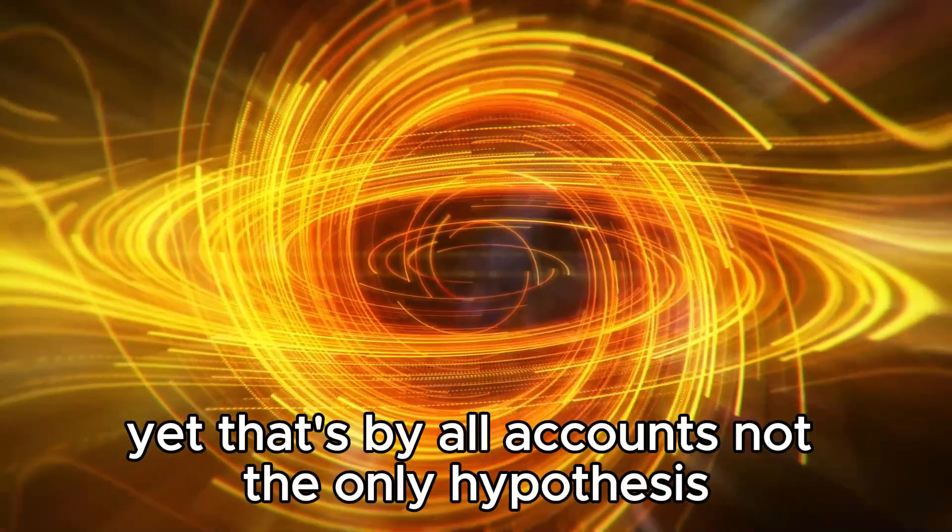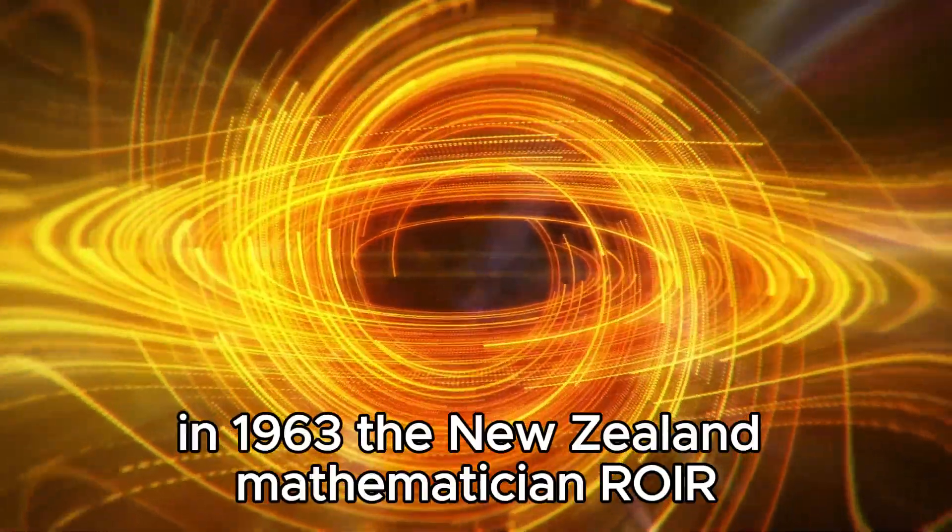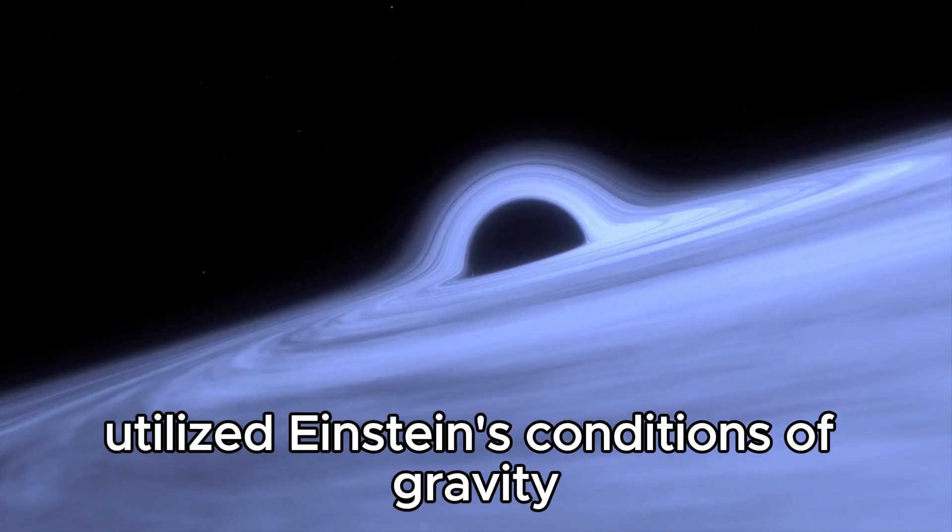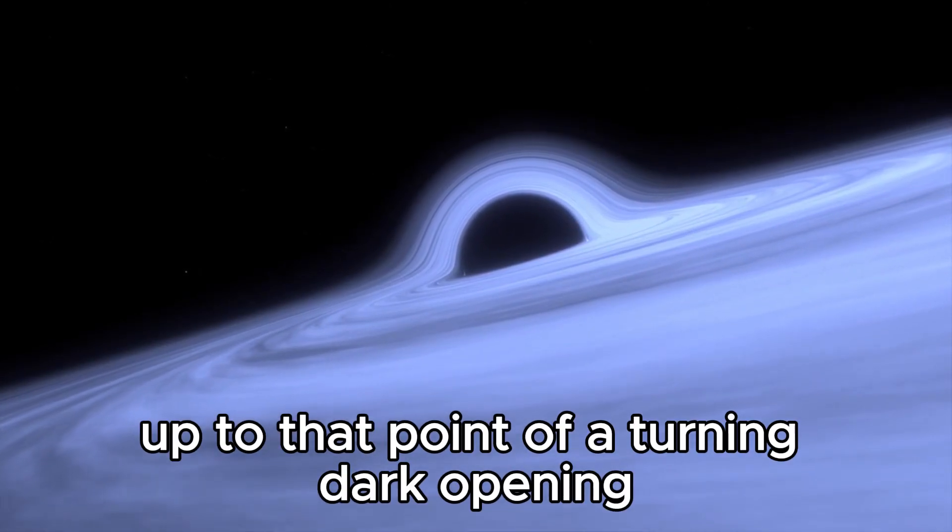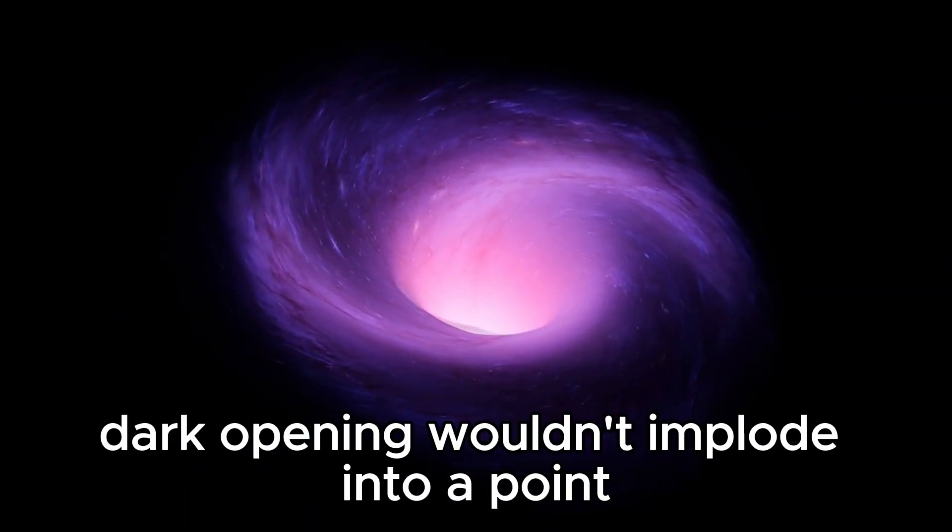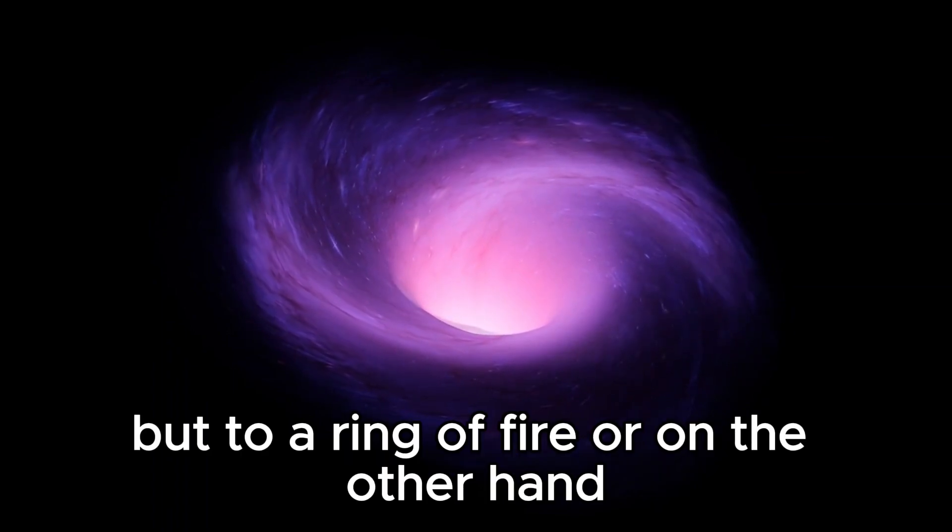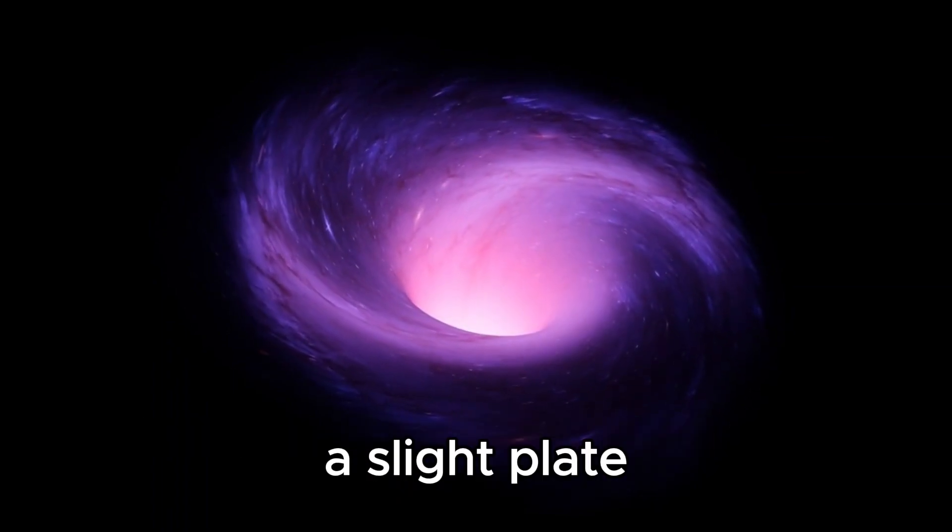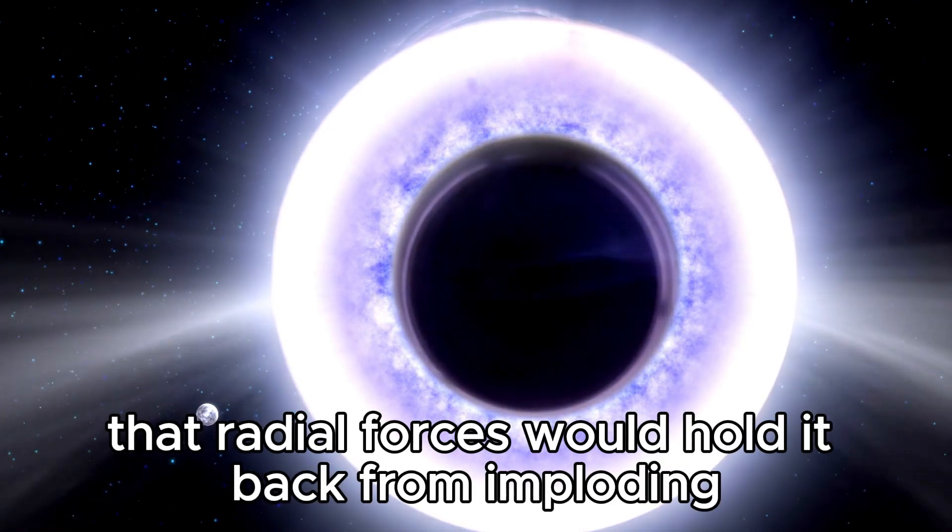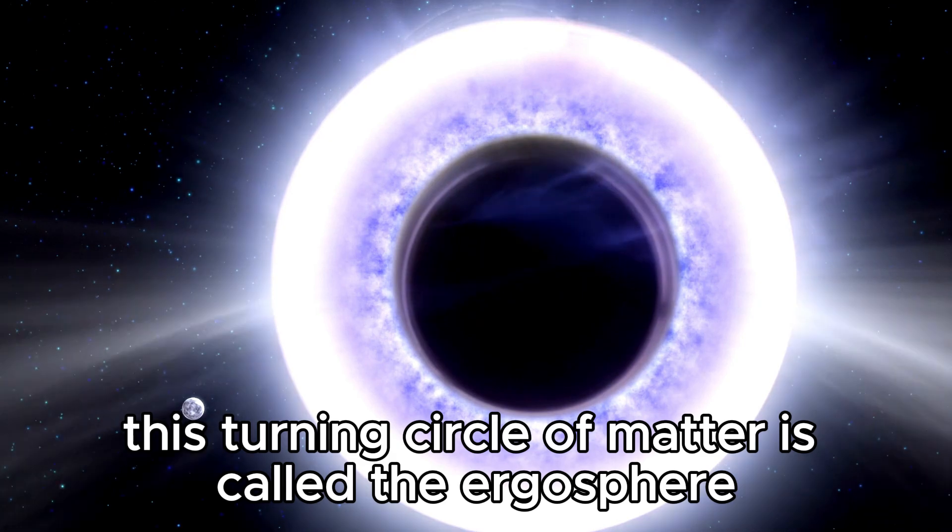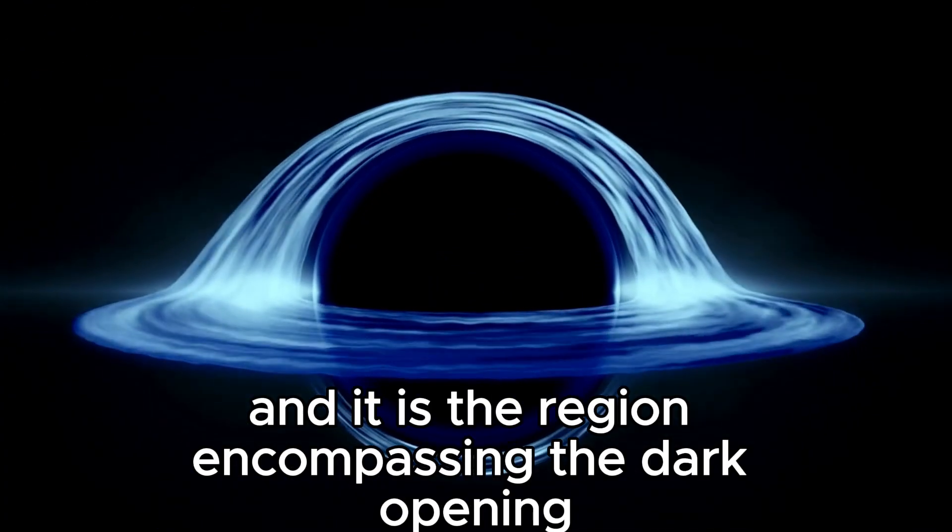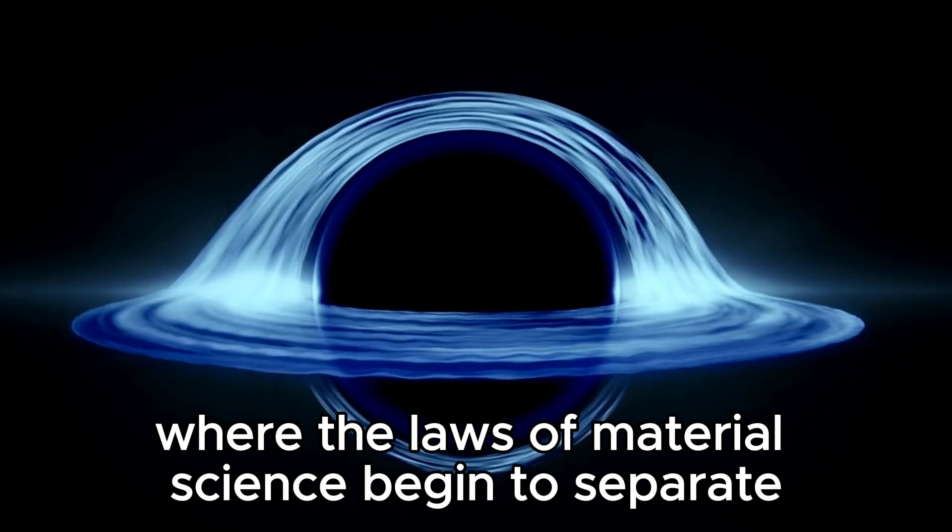In 1963, the New Zealand mathematician Roy Kerr used Einstein's equations of gravity to give the best depiction up to that point of a rotating black hole. Kerr showed that a rotating black hole wouldn't collapse into a point as previously thought, but to a ring of fire or a slight disk. The disc would be rotating so rapidly that centrifugal forces would hold it back from imploding.